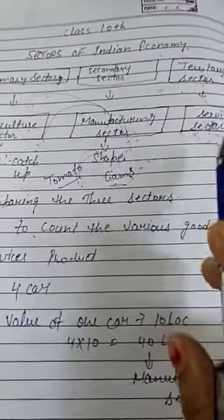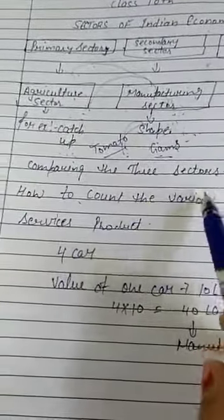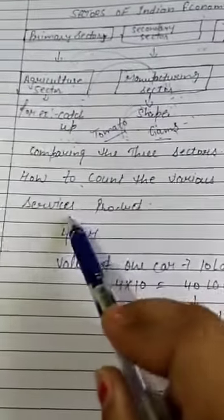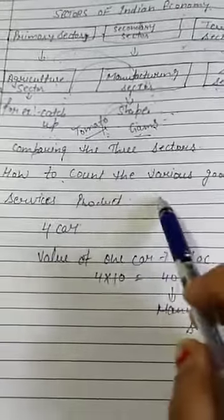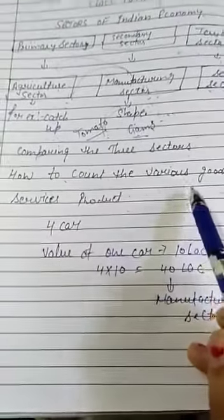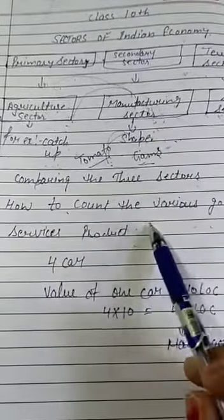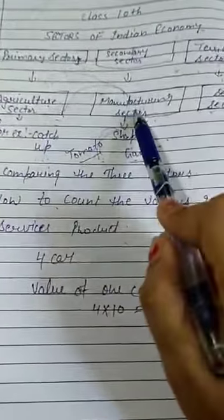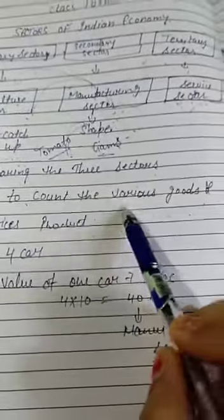Next step we will do is comparing three sectors. How to count the various goods and services produced? How to count the goods and services in the agriculture sector, manufacturing, or service sector?